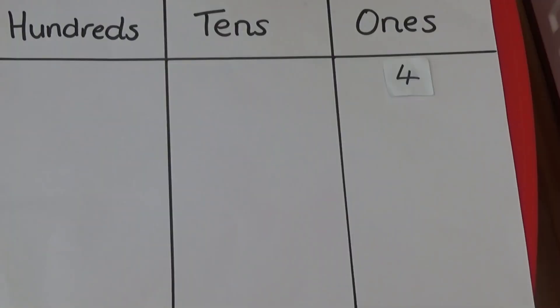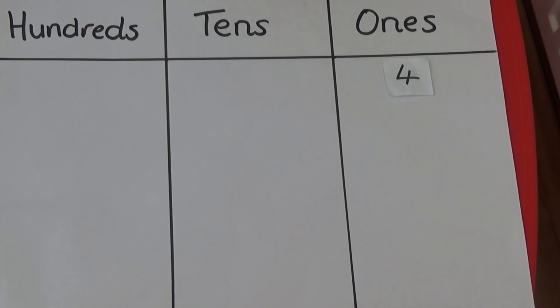If the number is 4, I need to put 4 in the ones column and can represent it using four ones counters. In this first number, the 4 has a value of 4.